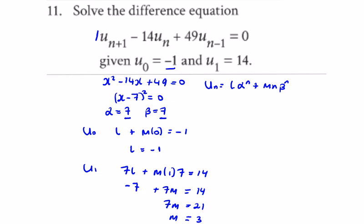So the solution to un is l, which is minus 1 times 7 to the power of n plus m, which is 3 times n times 7 to the power of n. So we're going to get 7 to the power of n times 3n minus 1.